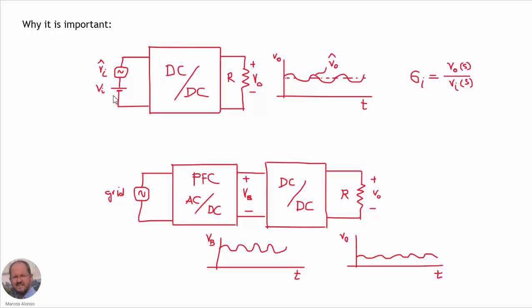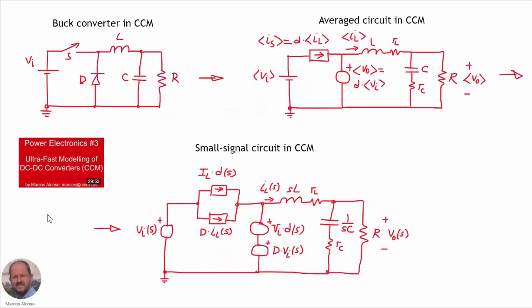So the audio susceptibility transfer function is a very important characteristic of our DC-DC converter. Let's see how to theoretically calculate it. In a previous video, Power Electronics number 3, we saw how to do an ultra-fast modeling of DC-DC converters. For the case of continuous conduction mode, which is the case we are considering here, we can obtain the average circuit of the buck converter in continuous conduction mode.